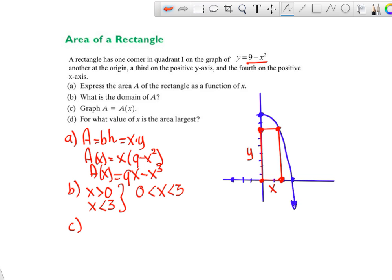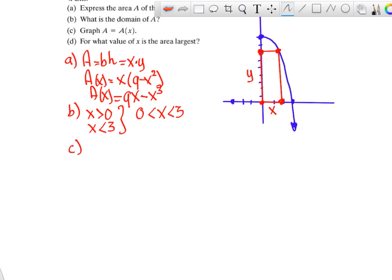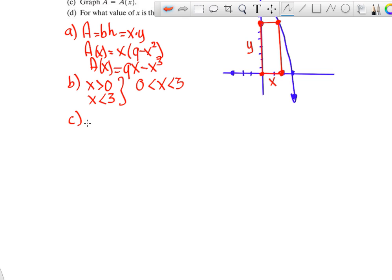C. Graph it. Well, graph the area function. So this is not the area function. The area function is 9x minus x cubed. And since we have a fairly limited domain, we can only go from 0 to 3. I'm just going to plug in all the numbers, all the integers from there to there. So 0 would be 0. This one is 9 minus 1, so that's 8. 9 times 2 is 18 minus 8, that's 10. And 3 times 9 is 27 minus 27 is 0. So graphing that would make it look a little like this.